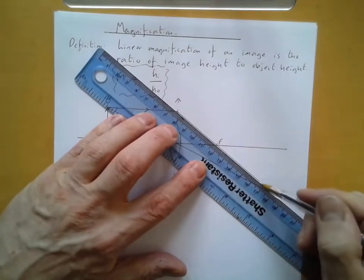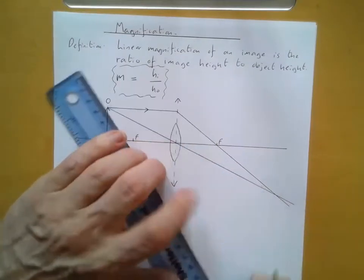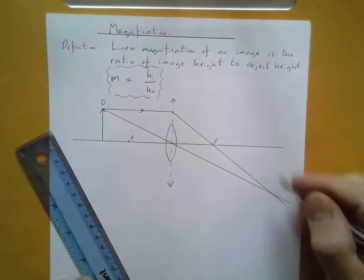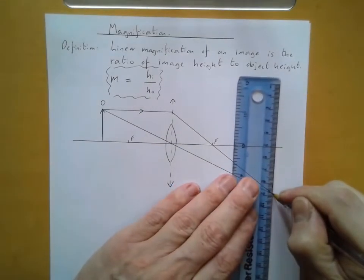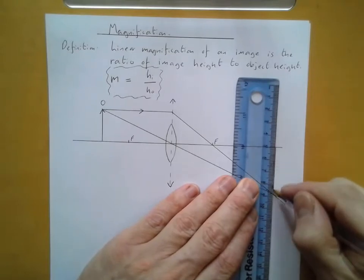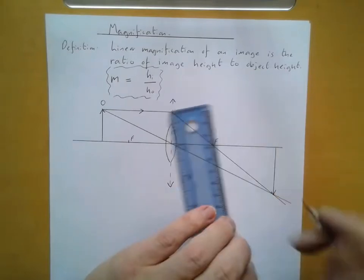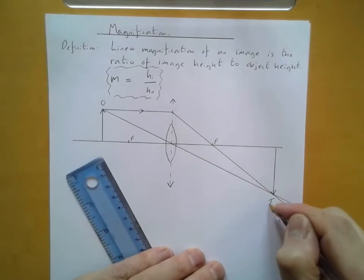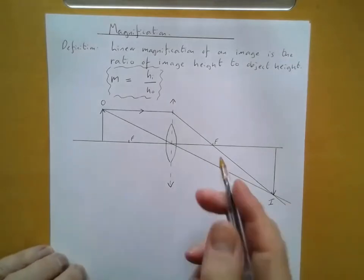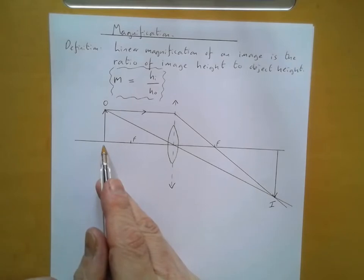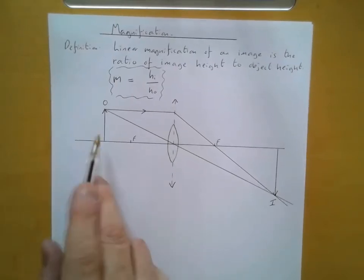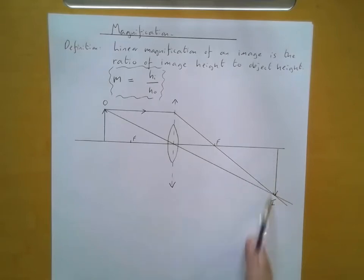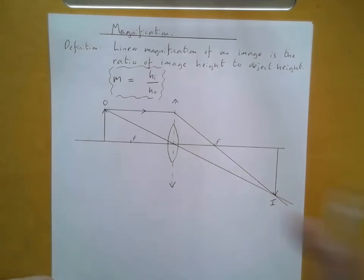We extend the rays to find where they meet, and that gives us the image location. In this case, we placed the object beyond the principal focus but before twice the focal length. The image is real, it's inverted, and it is magnified because it is bigger than the object.